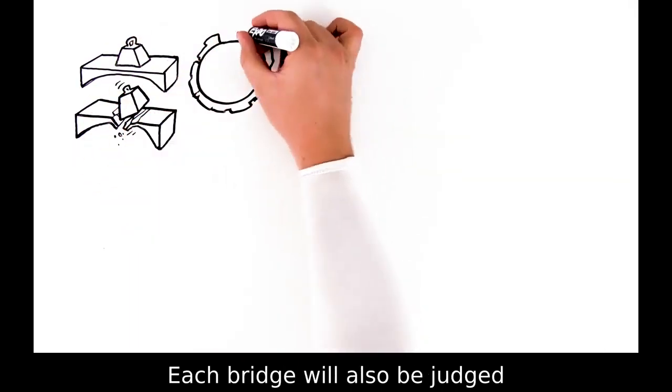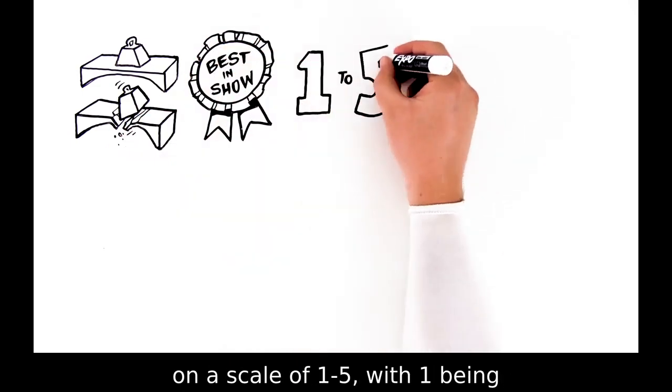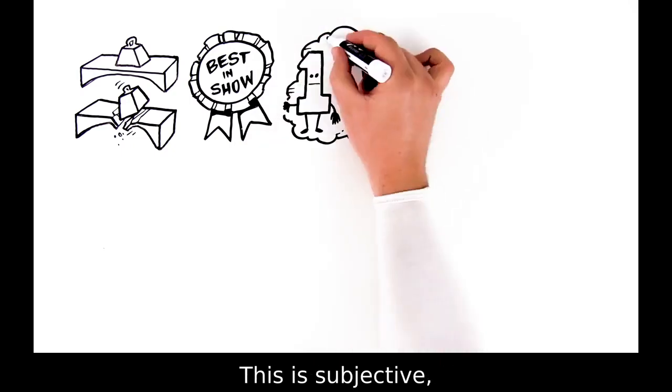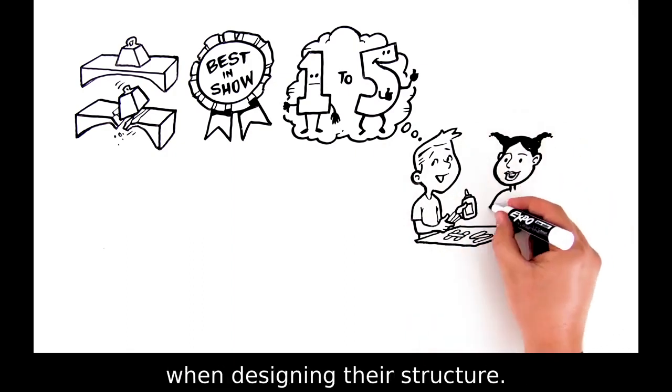Each bridge will also be judged by the class for its aesthetic value on a scale of one to five, with one being not at all appealing and five being very appealing. This is subjective, but encourage students to be creative and keep aesthetics in mind when designing their structure.